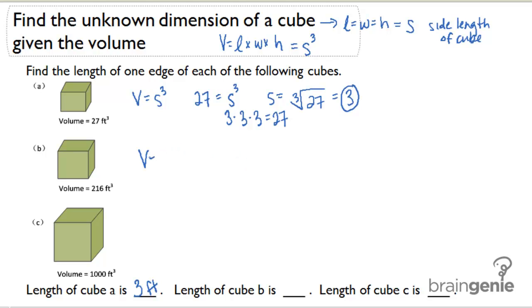For part B, I'm going to do the same thing. V equals S cubed. So I'm looking for a number that multiplied by itself two times gives me 216. Or I can simply say S equals the cubed root of 216, and the cubed root of 216 is 6. So the length of cube B is 6 feet.